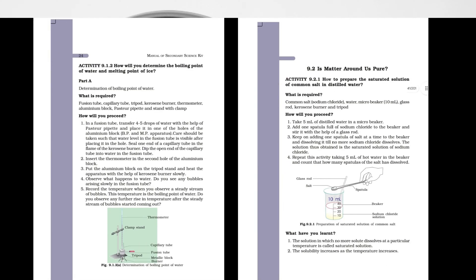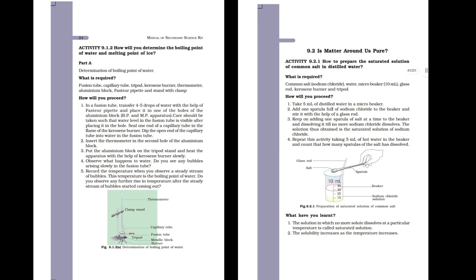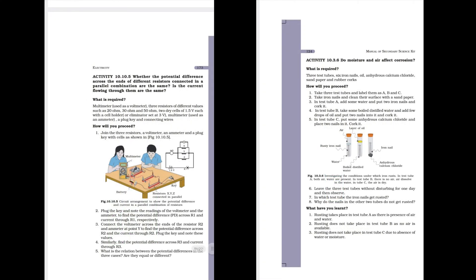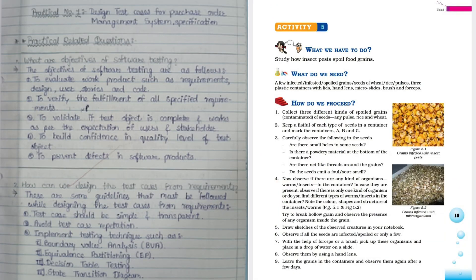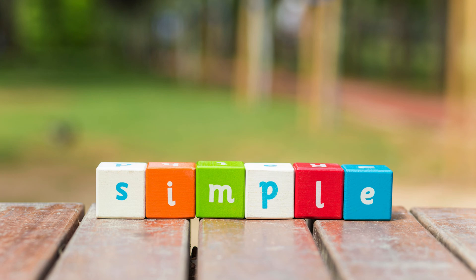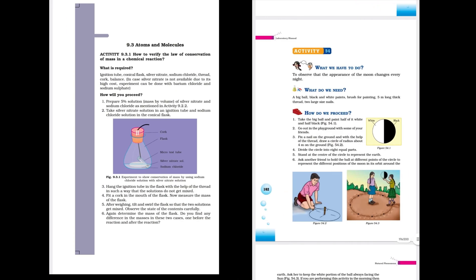Objective: the purpose of the experiment, explaining what the students are expected to learn or observe. Theory: a brief theoretical background that explains the scientific concept or principle behind the experiment. This should be explained in simple terms for younger classes 6 to 8 and in more detail for higher classes 9 to 12.